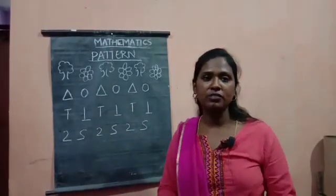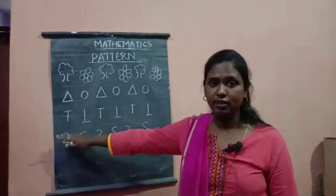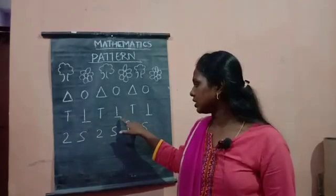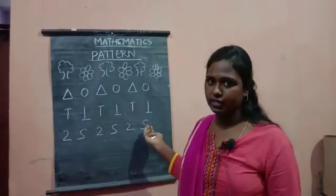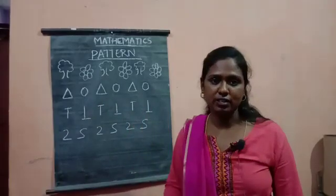Let us see in the form of letters. Here we have T, inverted T, T again inverted T, T again inverted T. So this is also the form of pattern children.